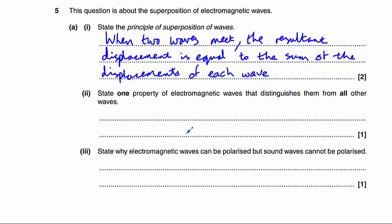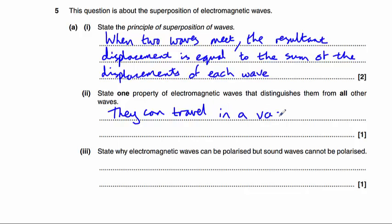Part 2 asks us to state one property of electromagnetic waves that distinguishes them from all other waves. There are a couple you could use. One is that they can travel in a vacuum.